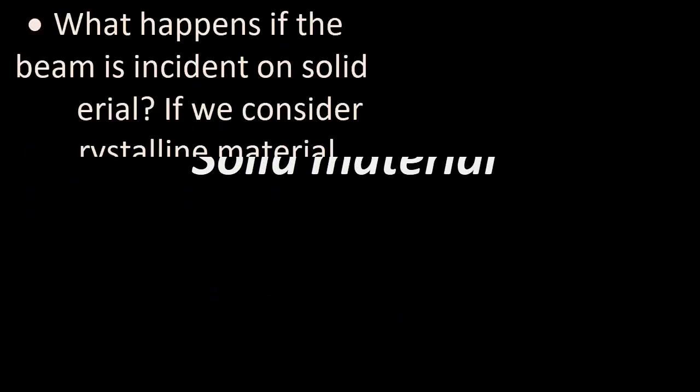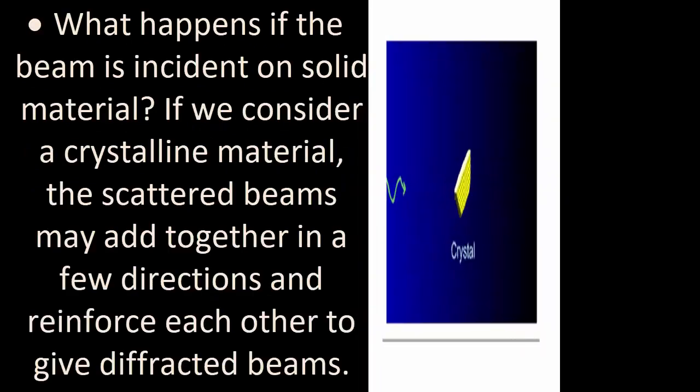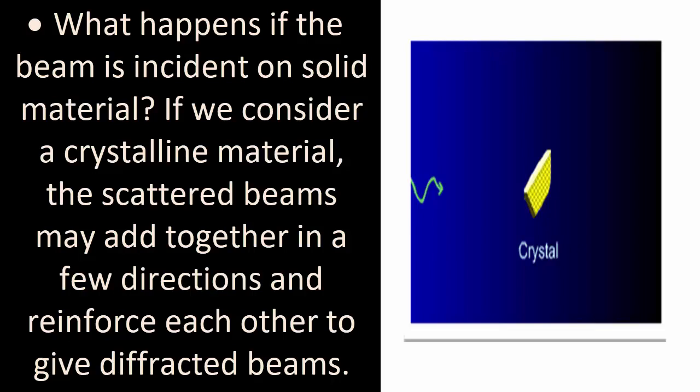What happens if the beam is incident on solid material? If we consider a crystalline material, the scattered beams may add together in a few directions and reinforce each other to give diffracted beams.